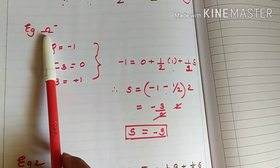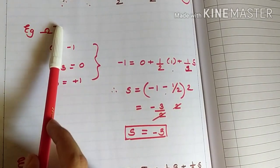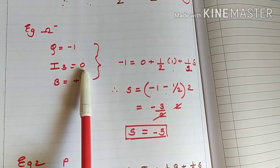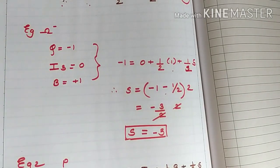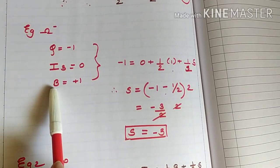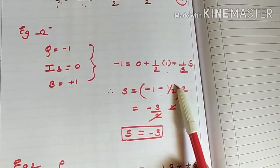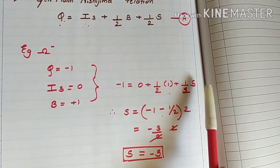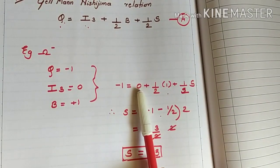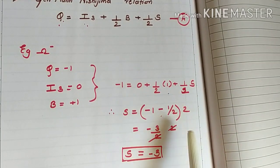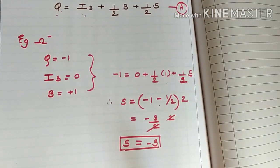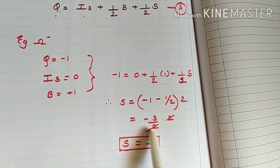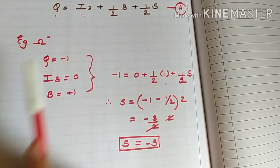For omega minus, the charge Q equals minus one since it is a minus particle. From the chart, I3 equals zero, and since omega hyperon is a baryon, baryon number B equals plus one. Putting all three values into the Gell-Mann Nishijima relation: minus one equals zero plus half times one plus half times S. Solving for S, we get strangeness equal to minus three for omega hyperon.